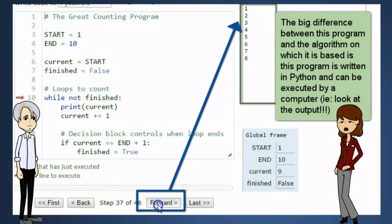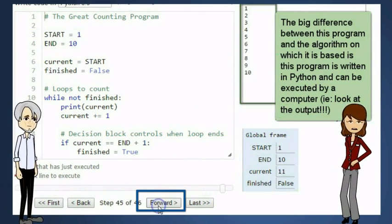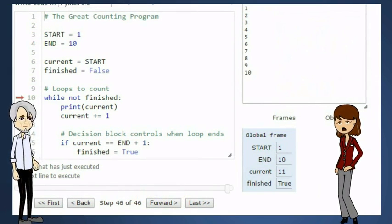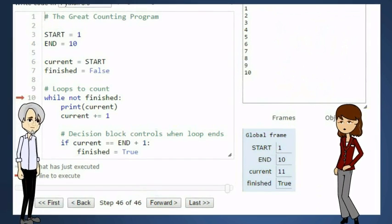I see. So what you're saying is that algorithms and programs are similar. The main difference in our example is that the algorithm is written in English and the program is written in Python.